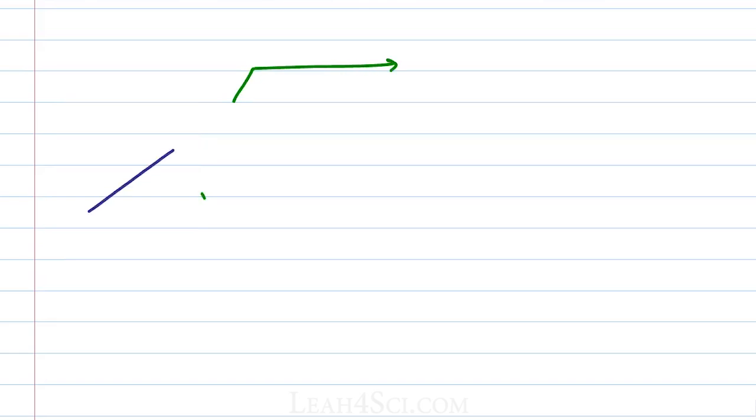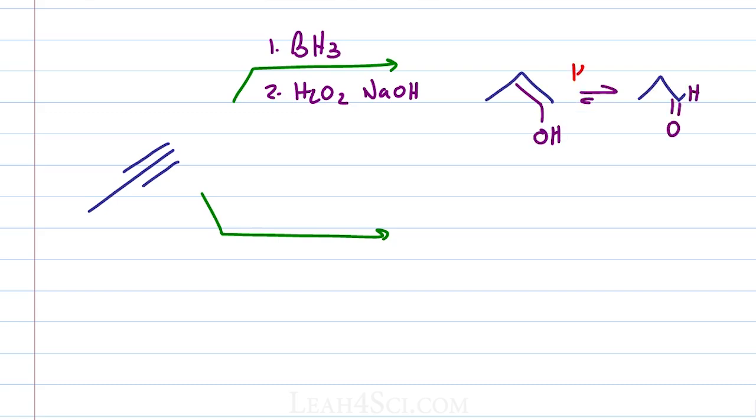We can do a hydration reaction which initially gives us an alcohol but then through keto-enol tautomerization gives us a carbonyl. For example, if I use BH3 followed by H2O2 and NaOH, we'll get an enol at the anti-Markovnikov position that will immediately tautomerize to give us an aldehyde.